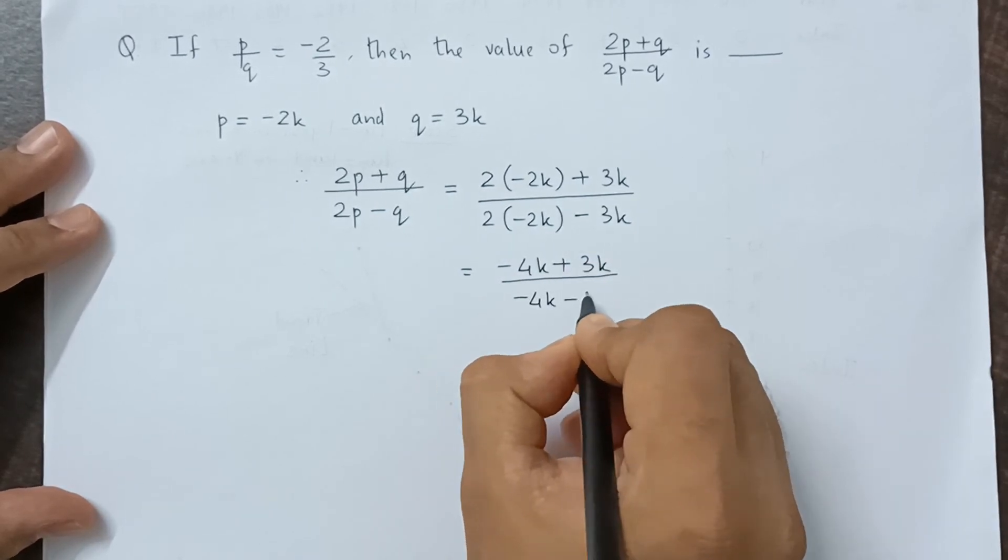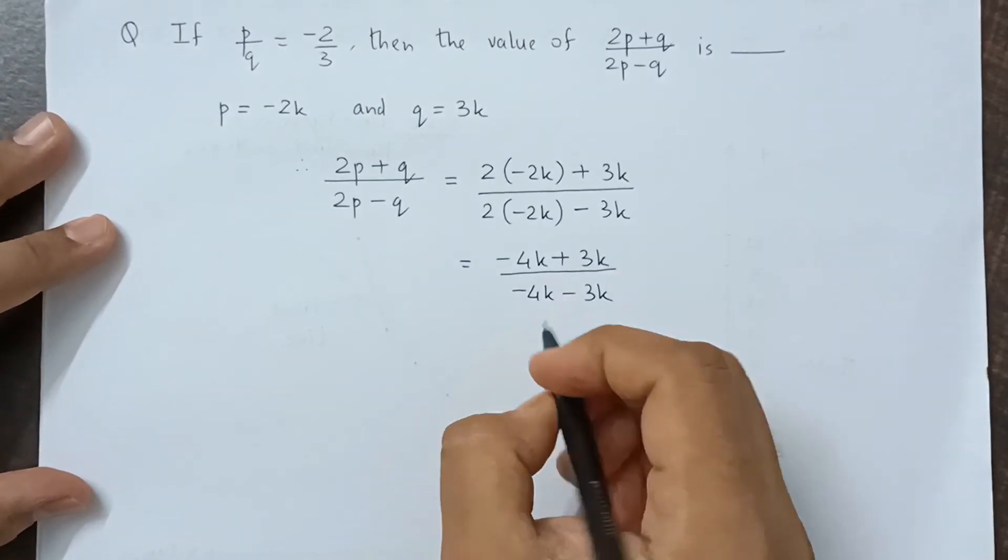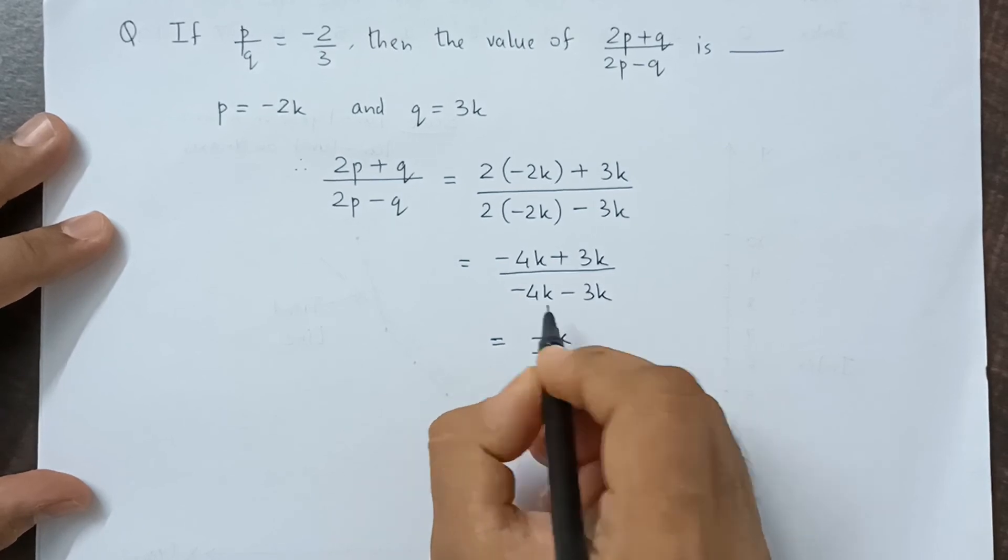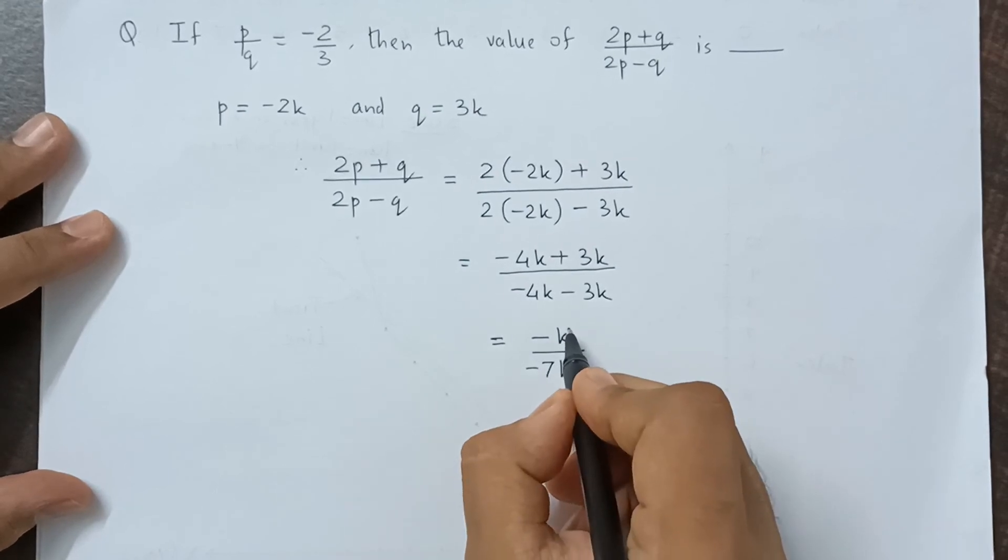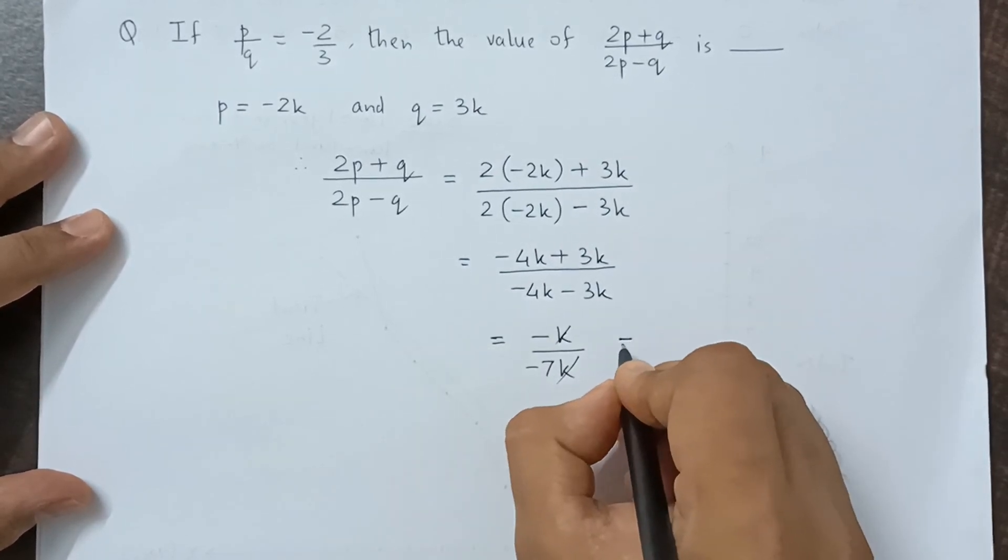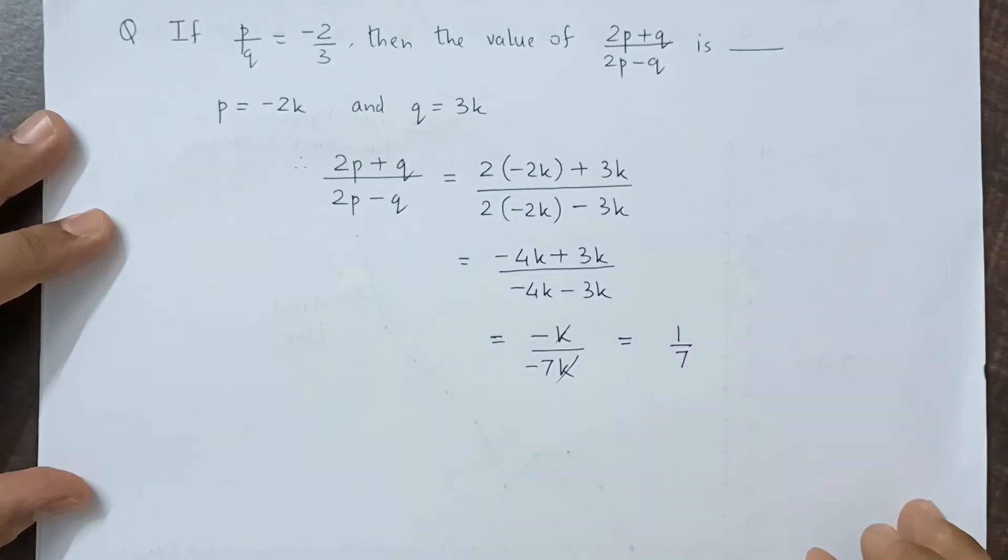In the denominator we have minus 7k. Now k and k get cancelled off, the negative sign also gets cancelled off, so our final answer is 1 by 7.